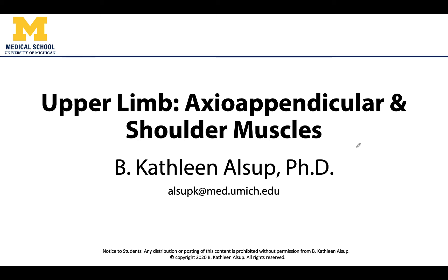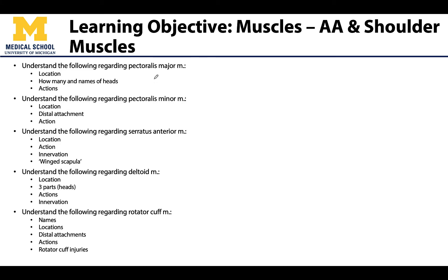Hello, this is Dr. Alsup, and in this video we're going to begin our discussion on the muscles of the upper limb. As always, we're going to start proximally and move distally. Our first set of muscles are those axial appendicular muscles. Our major muscles are going to be pec major, pectoralis minor, serratus anterior, the deltoid, and lastly the rotator cuff muscles.